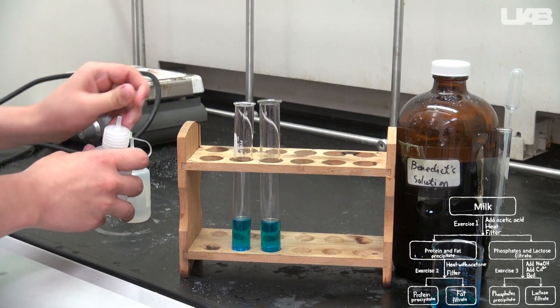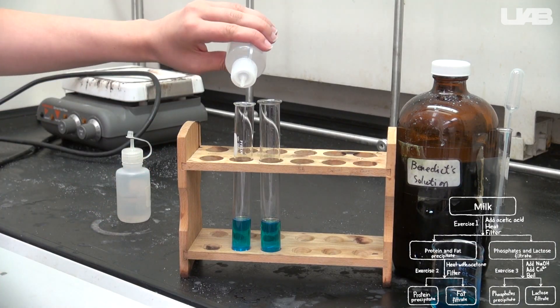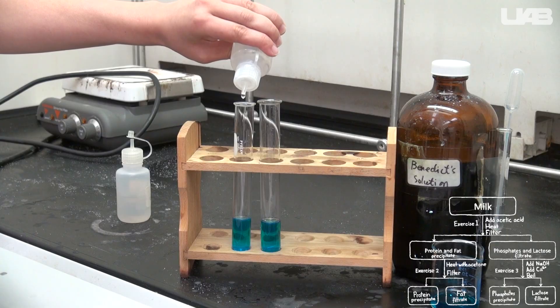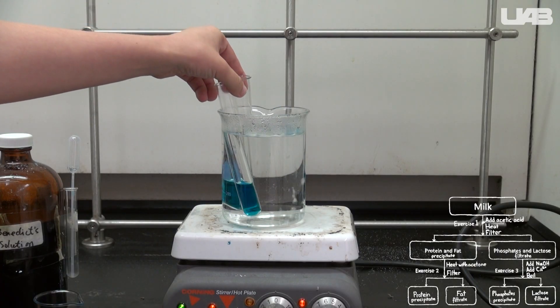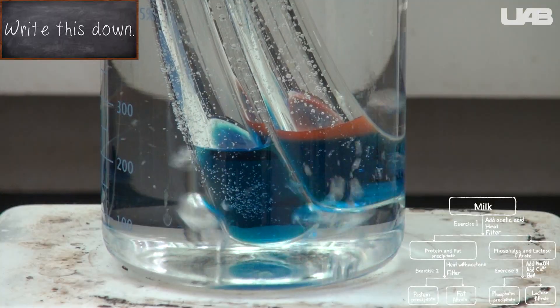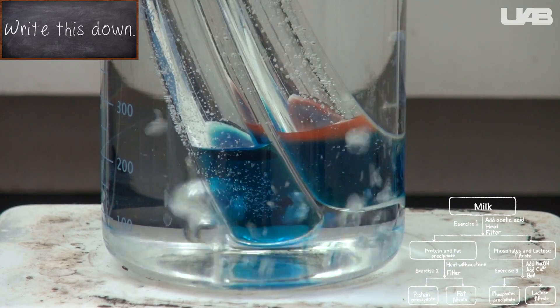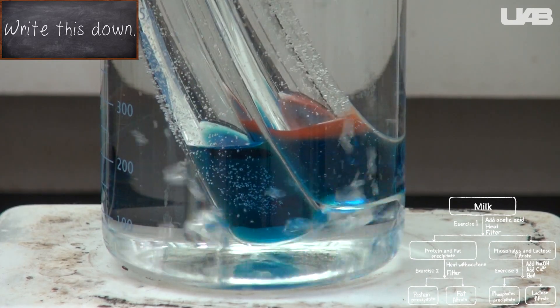In this video, we simply added water to the other test tube to show you what a negative result looks like. Place the two tubes in the boiling water bath and observe the color changes. The formation of a rust color precipitate indicates the presence of an aldehyde sugar.